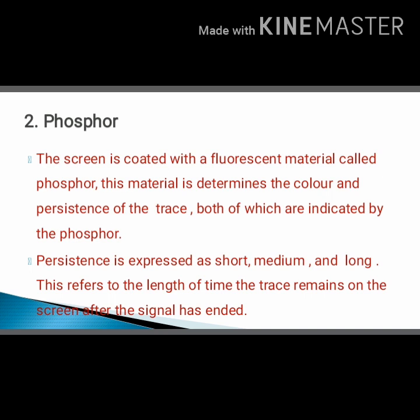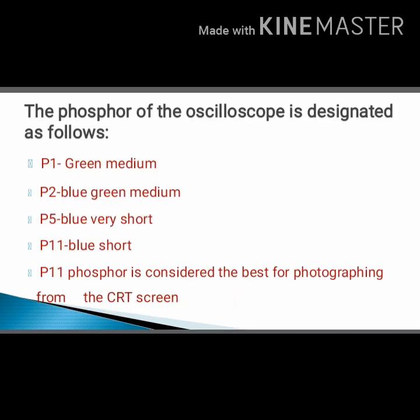Persistence is nothing but the length of time the trace remains on the screen after the signal has entered — that is what persistence means. This persistence comes in three types: the first one is medium, the second one is short, and the third one is long. These are the different kinds of phosphor colors, in which P11 is used in most devices.